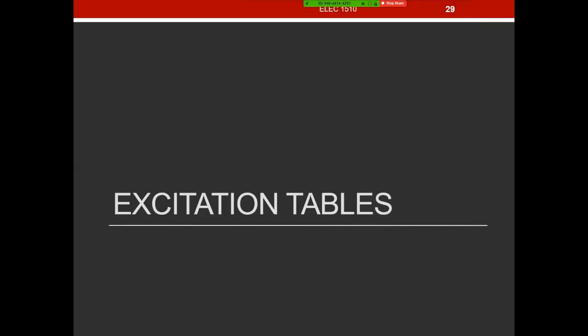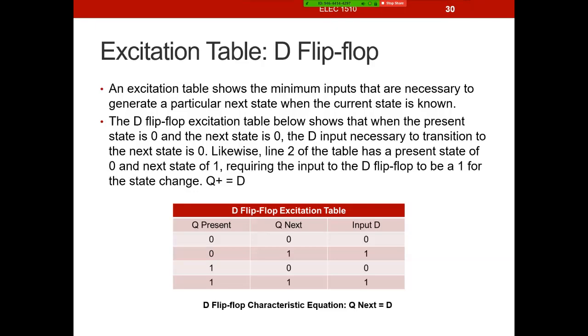We're now ready to talk about excitation tables. In the first two parts of this video series, we created a state diagram and then a state transition table for a finite state machine that detects the sequence 110. What we want to do now is go through how we use what are called excitation tables to determine the equations for different flip-flops. This is going to go through how those excitation tables are developed.